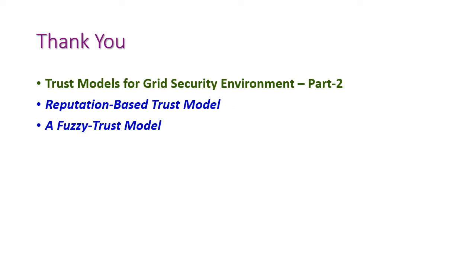Up to this we have seen trust model for good security environment Part 2. In Part 2 we have learned the reputation-based trust model and the foresee trust model. These two trust models are very important in a grid security environment. In the next video I will give you another important topic from the fifth unit. Thank you.